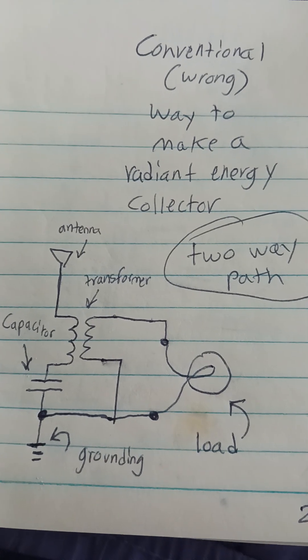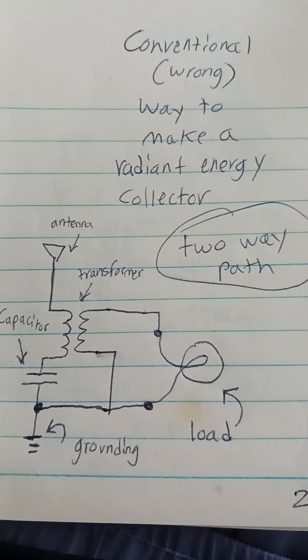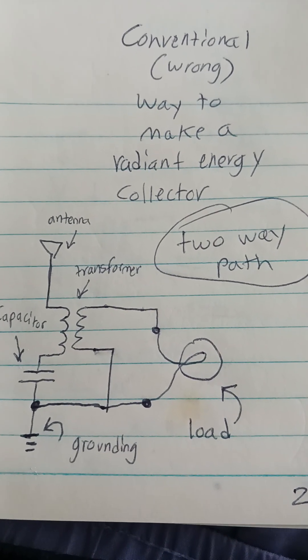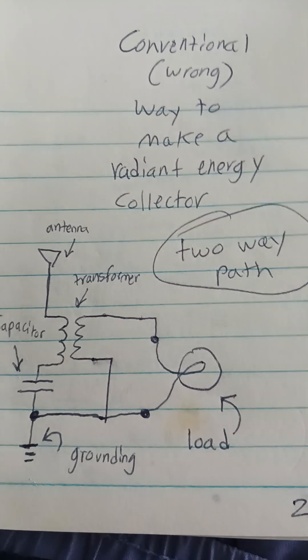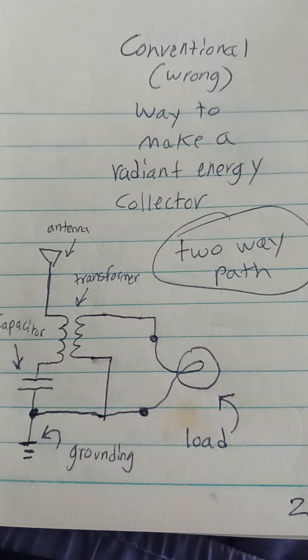This is a radiant energy setup that would be built if you use the conventional theory of how electricity works and how to use it with regular circuits, the two-way path.